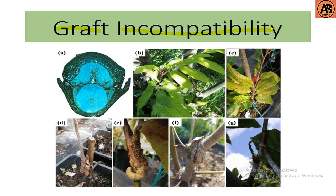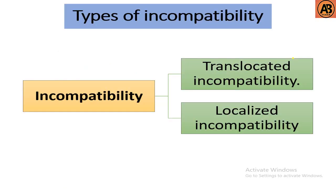On the other hand, the inability of two different plants to do so when grafted together is defined as grafting incompatibility. So we can say that grafting incompatibility means the inability of rootstock and scion to fuse together.